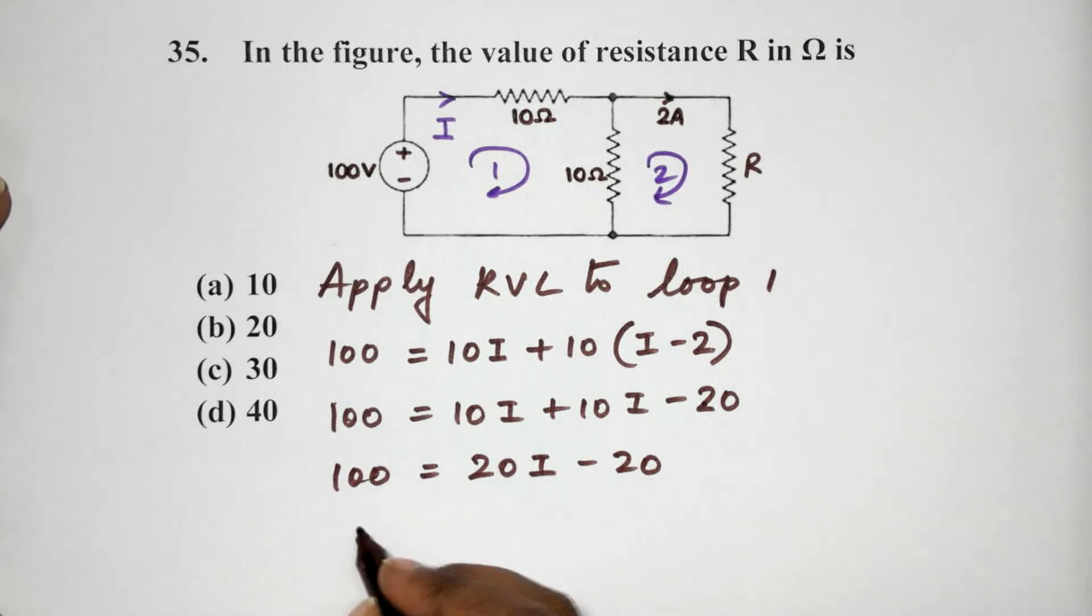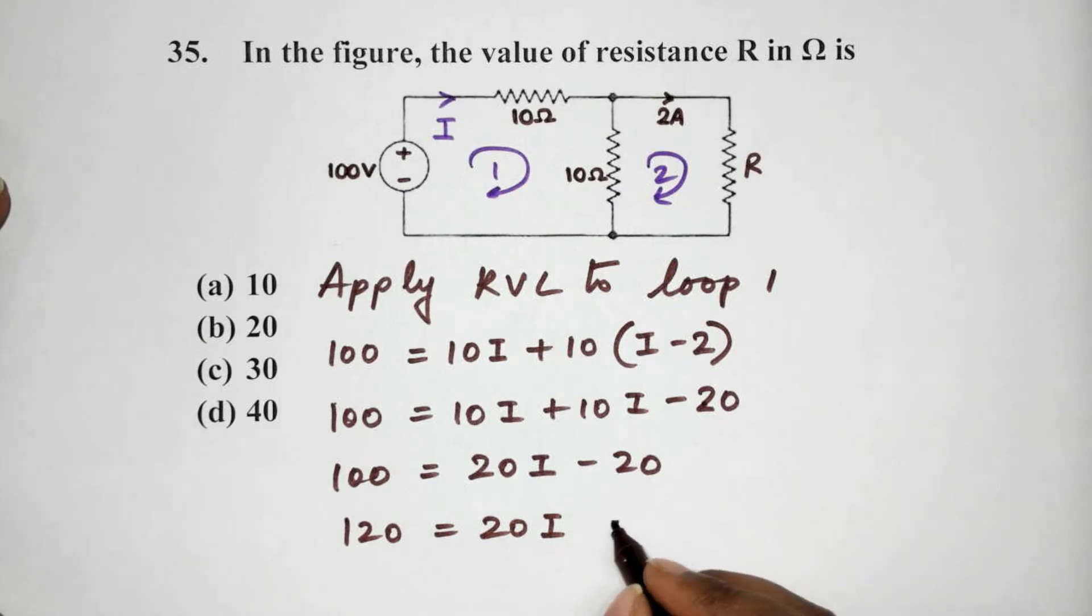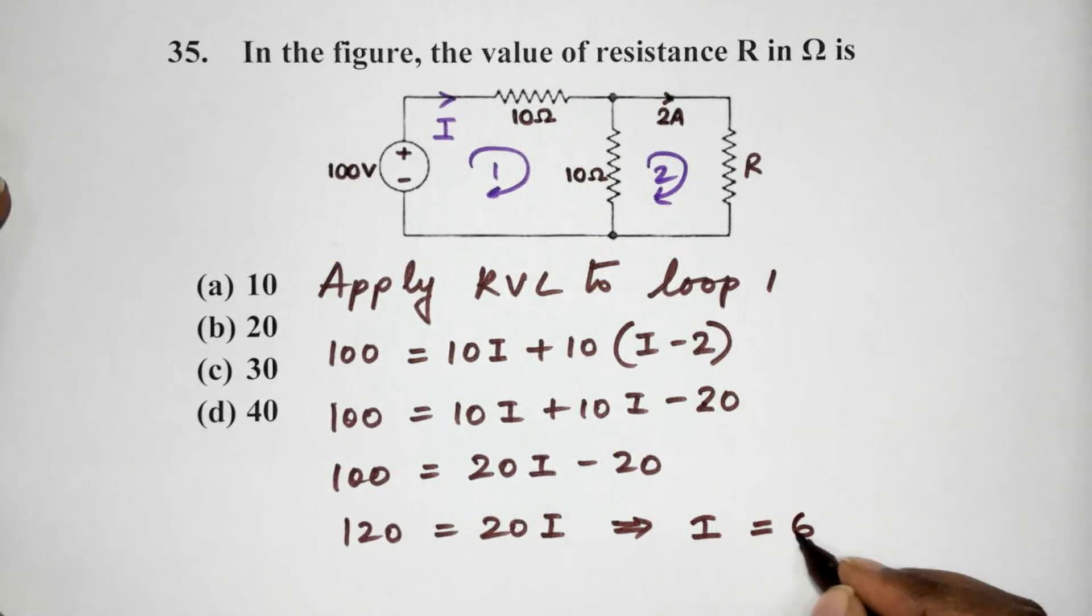We have 100 is equal to 20I minus 20. Let's solve for I. We will obtain 120 is equal to 20I and therefore, what is the value of I over here? I equals 6 amps.